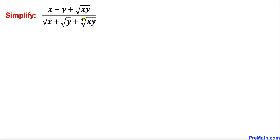Welcome to pre-math. In this video we are going to simplify this given radical expression: x plus y plus square root of x times y, divided by square root of x plus square root of y plus the fourth root of x y.